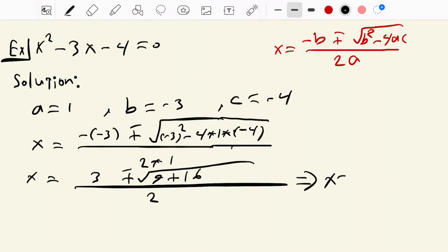Now it becomes x equal to 3 plus minus, 9 plus 16 becomes 25, square root of 25 is 5, over 2.